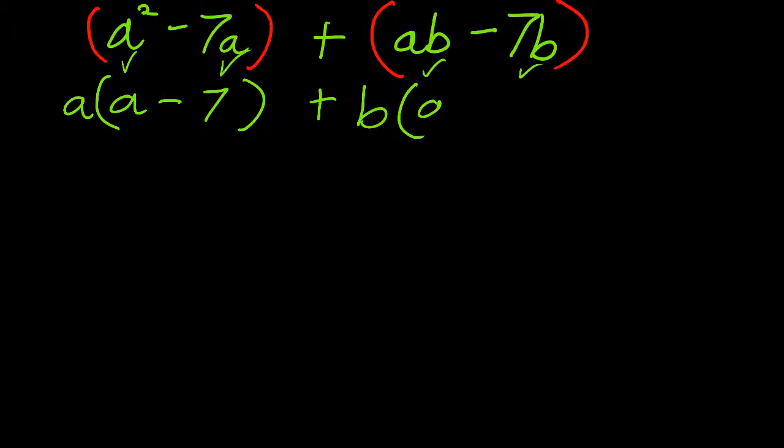So I'll write down an a, copy down the minus sign, and then b times what is 7b? 7. B times 7 is 7b. So now we've factored the second set of parentheses by GCF, the greatest common factor.